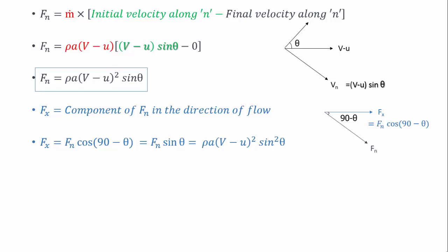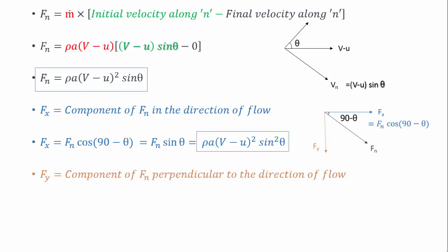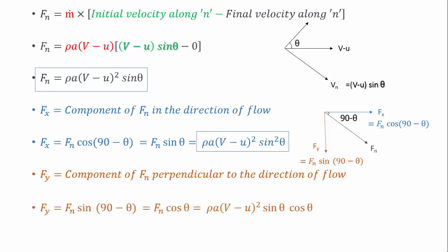Similarly, the component of force Fn along the y direction is Fn times sine(90 minus theta). Since sine(90 minus theta) equals cos theta, the force acting in the y direction is rho times A times (v minus u)² times sine theta times cos theta.